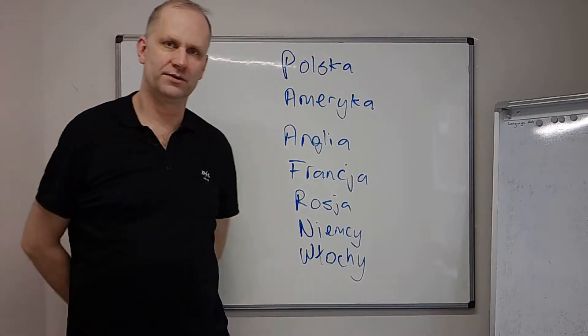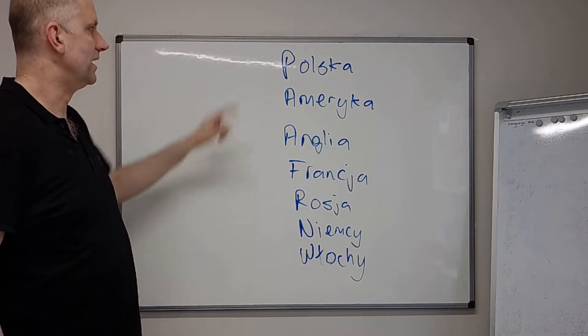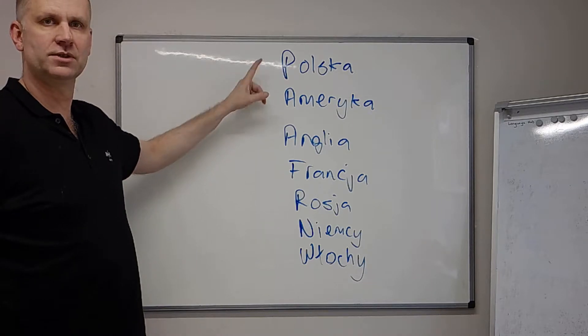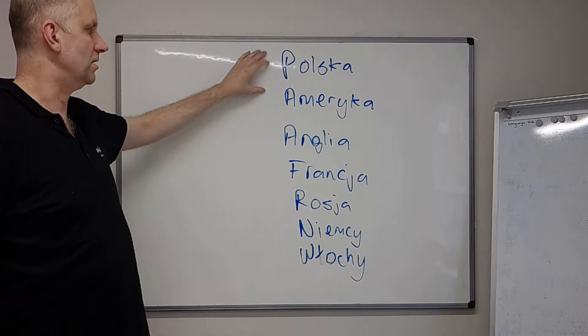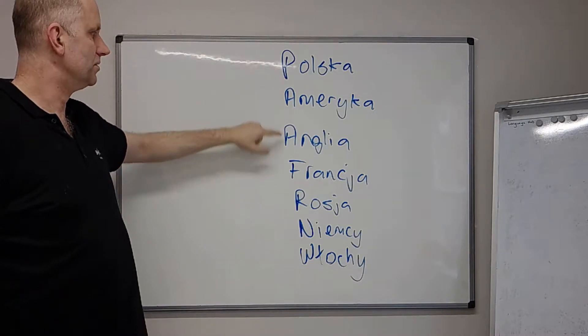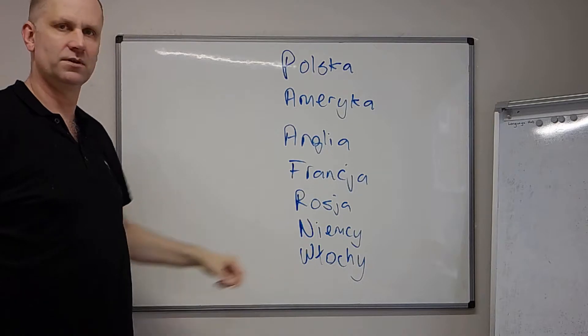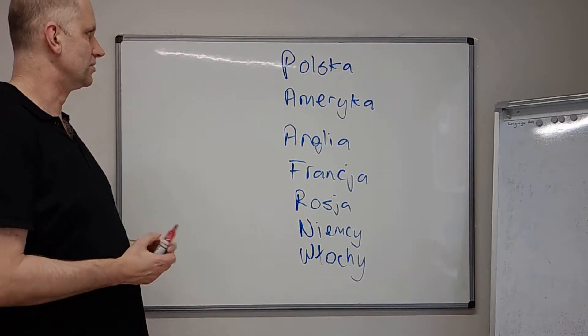Dzień dobry. In this tutorial we're going to look at countries in Polish. So here we've got one, two, three, four, five — so seven different countries.